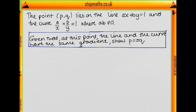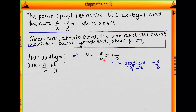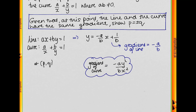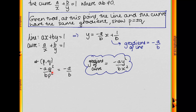Let's compare the gradient of the line and the curve. Looking at the line, it has a fixed gradient. Rearranging to find y in terms of x, we get y = -a/b·x + 1/b, showing the gradient of the line is -a/b. We know the curve's gradient from before, so at the point (p, q), the gradient of the curve is -aq²/bp², which equals -a/b.